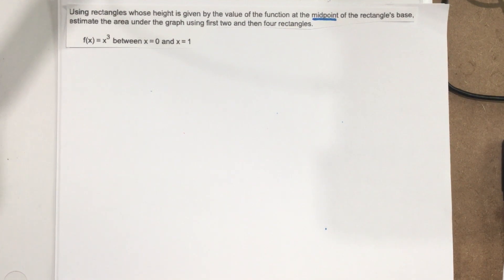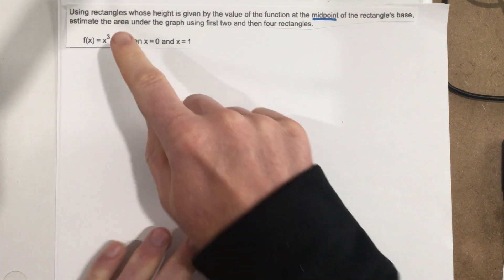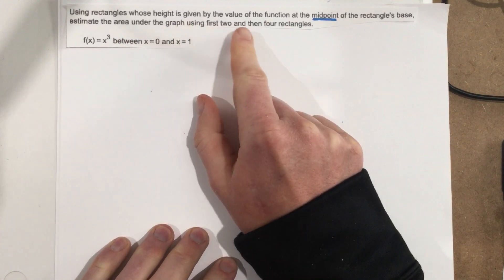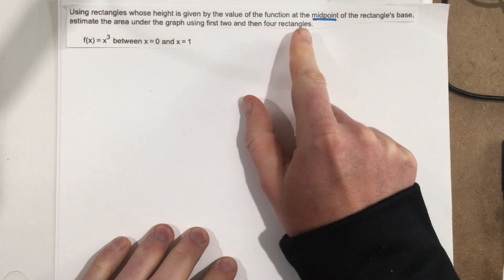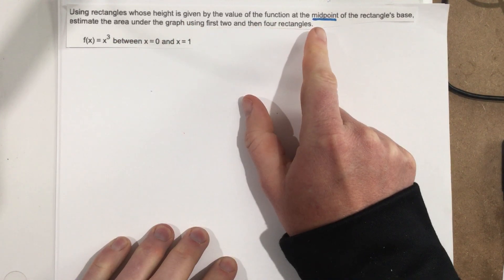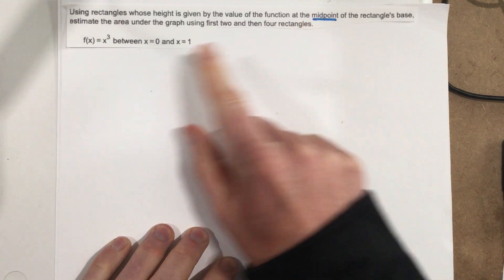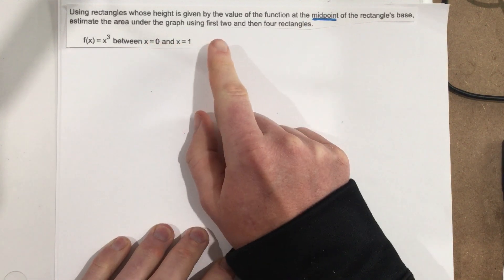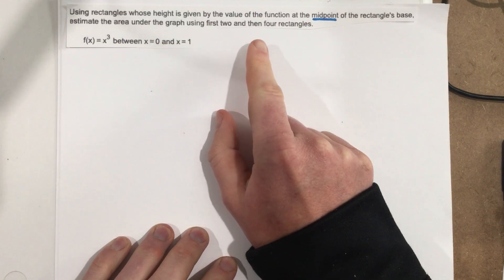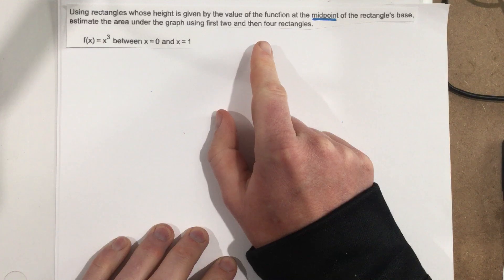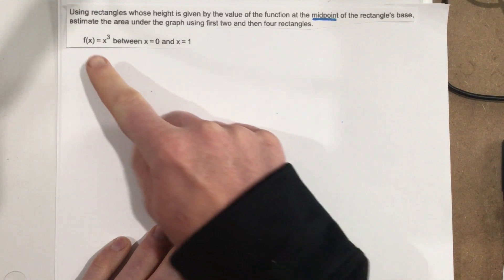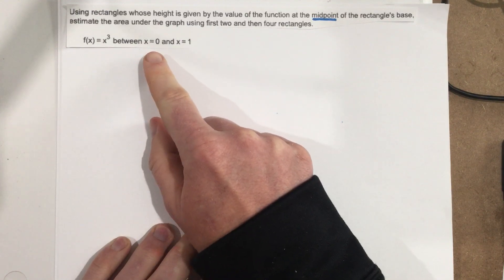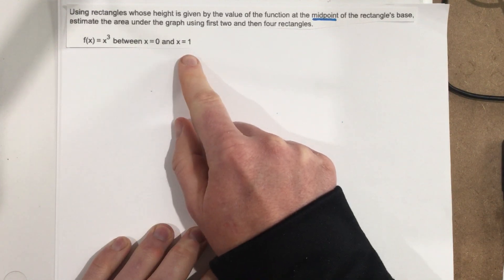This is problem number three from section 5.1. It says: using rectangles whose height is given by the value of the function at the midpoint of the rectangle's base, estimate the area under the graph using first two and then four rectangles. They give us a cubic, and they say it's between zero and one.